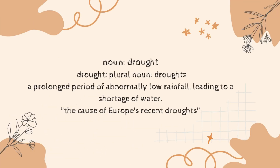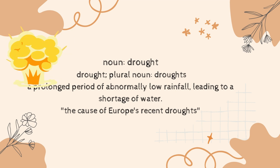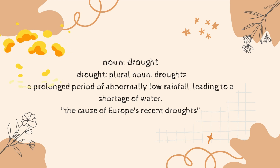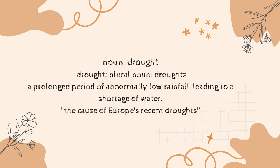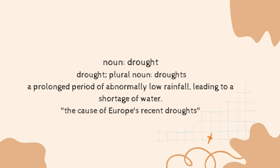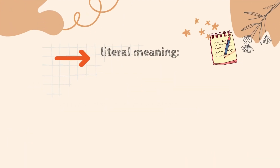Drought is a noun, and if used as a plural noun we say 'droughts'. For example: a prolonged period of abnormally low rainfall leading to a shortage of water. For your knowledge, a noun is a word other than a pronoun used to identify any of a class of people, places, or things.